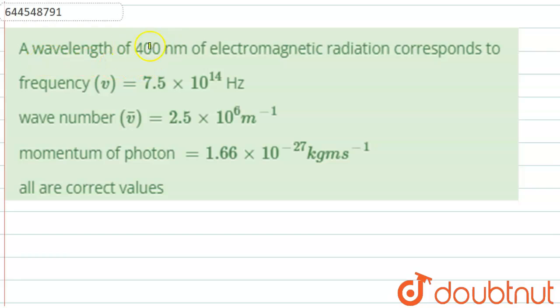The question given here is: a wavelength of 400 nanometer of electromagnetic radiation corresponds to frequency is equal to 7.5 into 10 to the power 14 hertz, wave number is equal to 2.5 into 10 to the power 6 meter inverse, momentum of photon is equal to 1.6 into 10 to the power minus 27 kg meter per second, and the last one is all the values are correct.